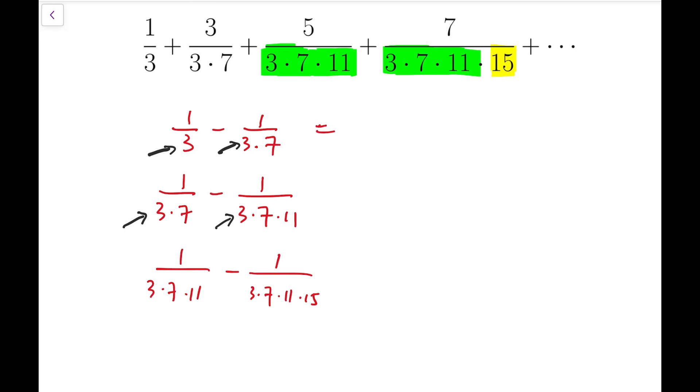So say for the first subtraction, I only need to multiply a 7 on the first term, so that becomes 7 over 3 times 7 minus 1 over 3 times 7. Imagine if I try to consider the difference of 1 third and 1 over 3 times 7 times 11 times 15, then I'll have to multiply a factor of 7 times 11 times 15 on the first fraction, and that will make it very large, and it's not convenient for computation.